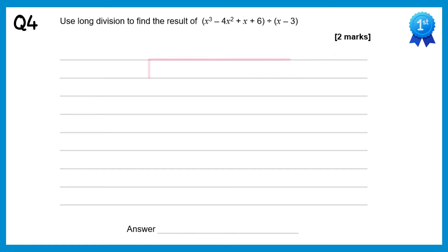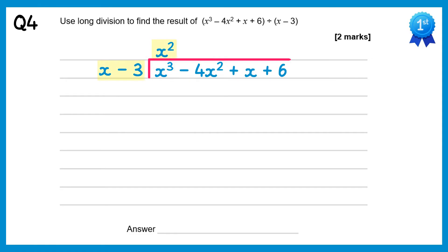For this one we do the bus stop, the cubic inside and the linear term outside. x cubed divided by x is x squared. Multiply x squared back through: x squared times x is x cubed, x squared times negative 3 is negative 3x squared. Now we subtract — we need to be careful. x cubed take x cubed is 0. Negative 4x squared take away negative 3x squared is actually negative x squared. Then bring down the plus x.